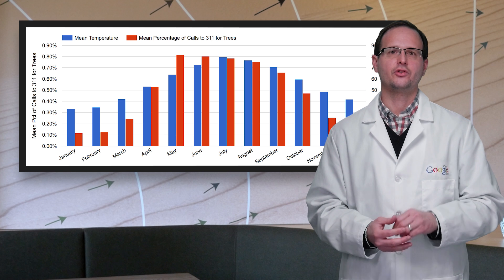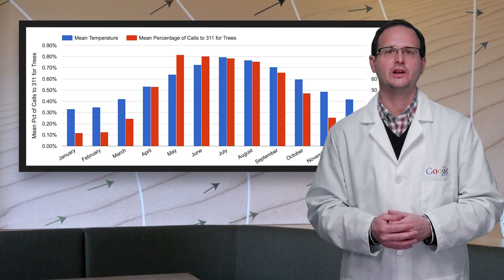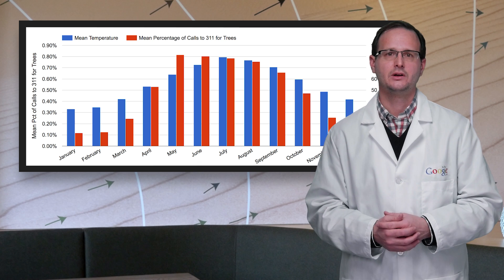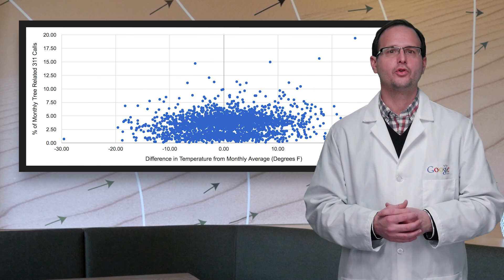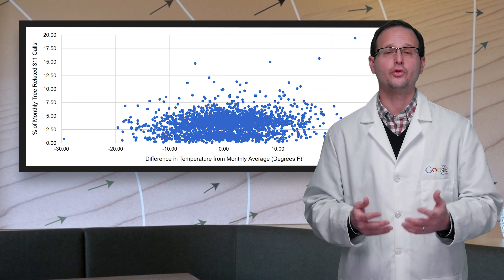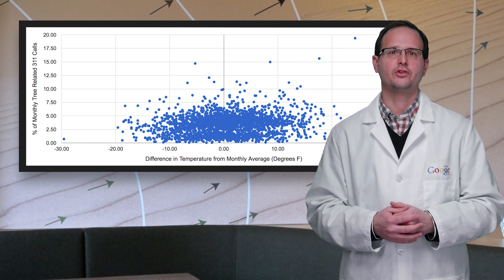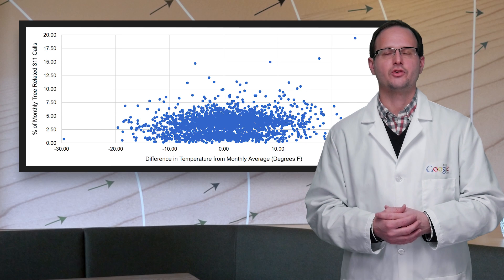So let's take those monthly averages and seasonally adjust our results to see if there's a pattern beyond the time of year. This graph measures the proportion of the month's tree-related calls to temperature minus the monthly average. And there's really not much to speak of in terms of trend.